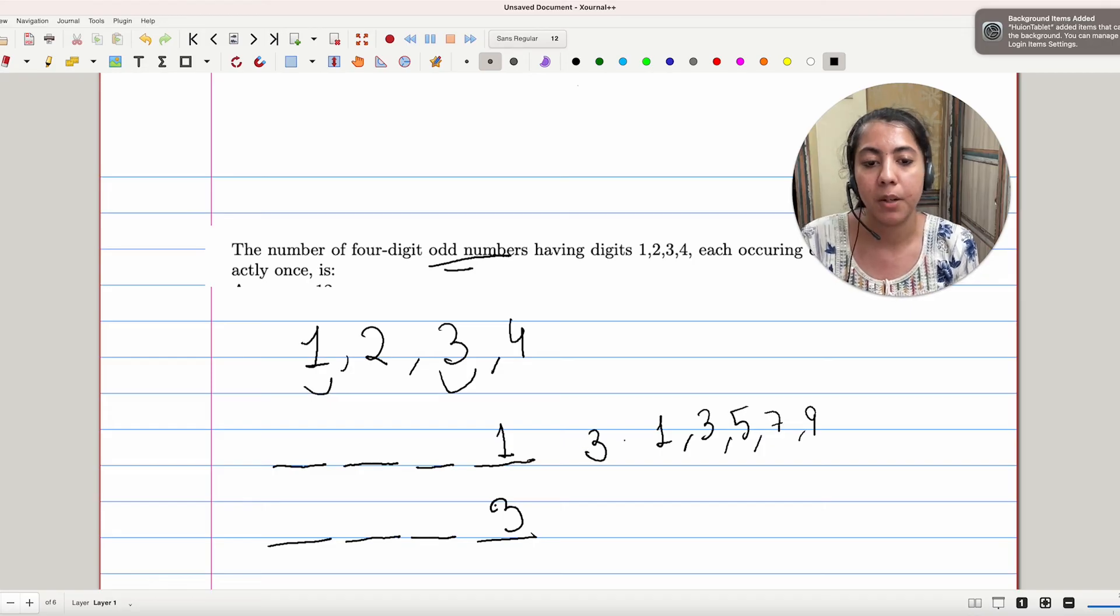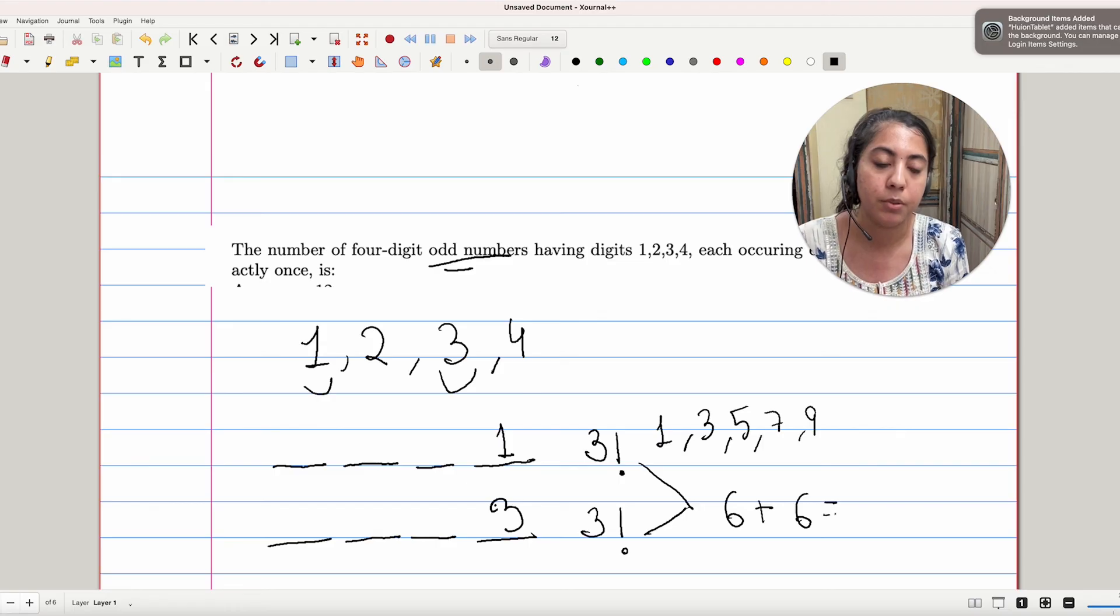That will be 3 factorial and 3 factorial. That gives us 6 plus 6, which equals 12. So there are 12 ways in which we can form 4-digit odd numbers from 1, 2, 3, and 4.